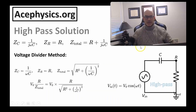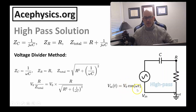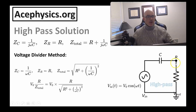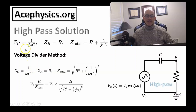Now let's discuss the high-pass filter solution. It's the same circuit. The input voltage from the power supply is V_0 cosine of omega·t, where V_0 is the amplitude and omega is the angular frequency. We're going to measure the voltage across the resistor, not the capacitor. To find a formula for the amplitude of the voltage across the resistor, I'll use the voltage divider method, showing that you can do all of this without complex numbers. The impedance of the capacitor is 1 over omega·C, and the impedance of the resistor is R.